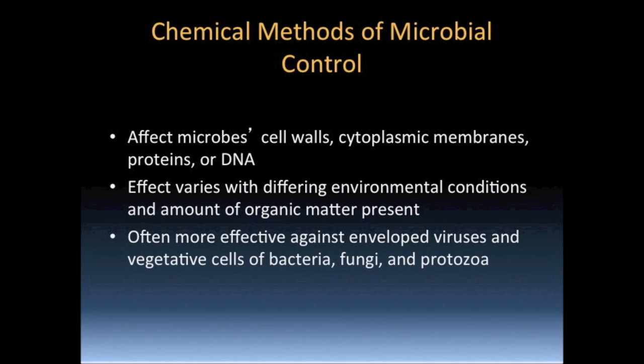The nine chemical groups are: phenols and phenolics, alcohols, halogens, oxidizing agents, surfactants, heavy metals, aldehydes, gaseous agents, and enzymes.